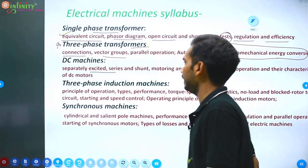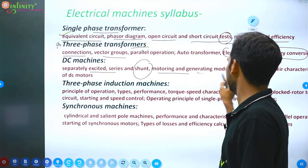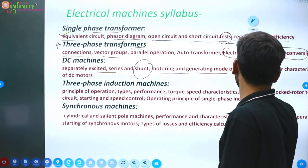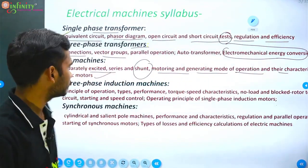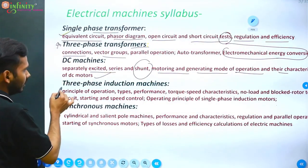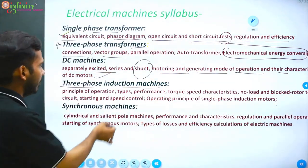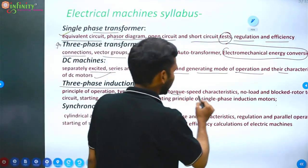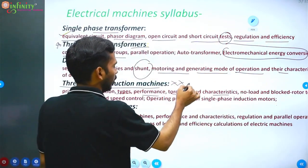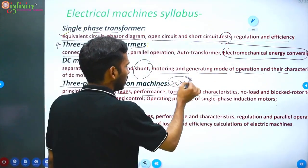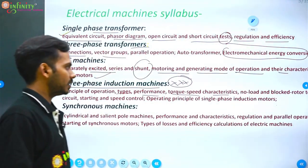DC Machines include separately excited, series, and shunt types — their motoring and generating modes of operation and characteristics of DC motors. In three-phase induction machines, we cover the principle of operation, types, performance, and torque-speed characteristics, which is again a very important part for competitive examinations.